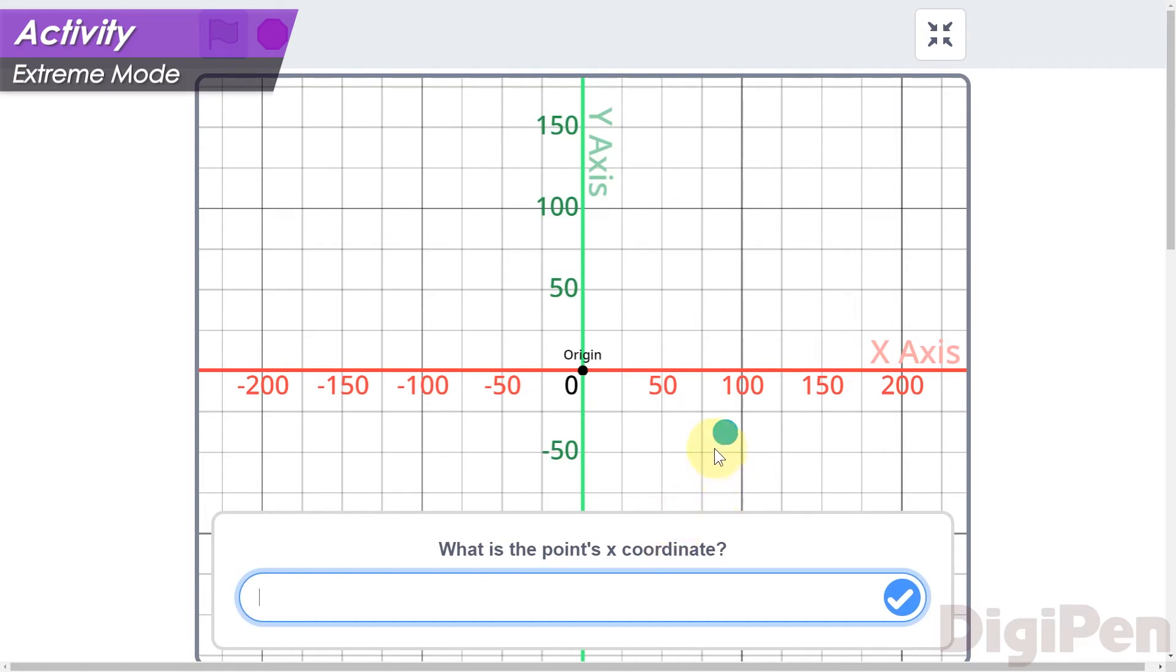This makes it a lot harder to guess just right. Shall we try it out? Horizontally, the circle moved to somewhere between positive 75 and positive 100 units along the x-axis, and it looks like it's closer to 75, so let's guess 78.